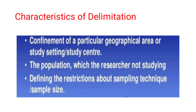Another characteristic is defining restrictions on sampling technique or sample size — what technique is used and why other techniques were not selected. For example, if assessing pain and mobility status of osteoarthritis clients, the researcher may delimit to patients receiving only pain medications like Paracetamol or Ovirone, excluding those receiving Ayurveda, Siddha, Yunani, or Homeopathy therapies.